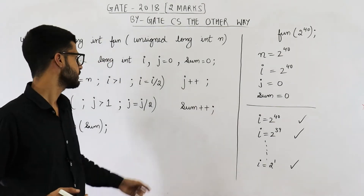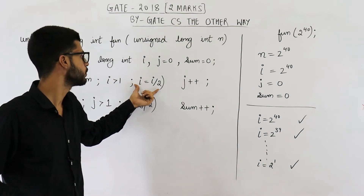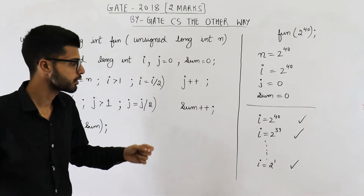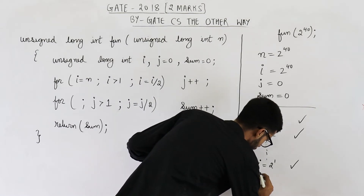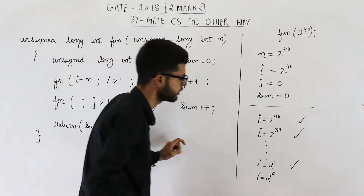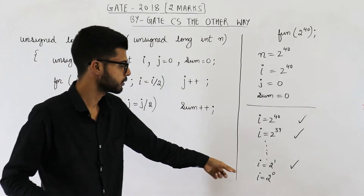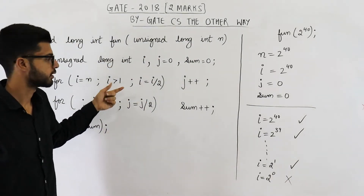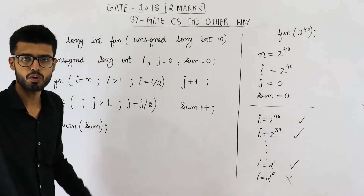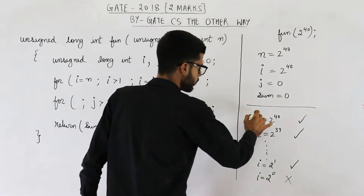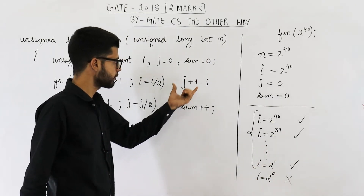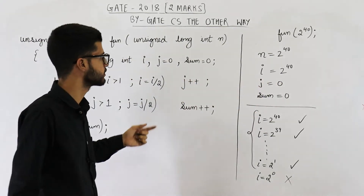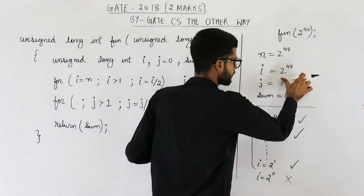In the next iteration, i will become i divided by 2, meaning i becomes 2 raised to the power 0, which is 1. Since 1 is not greater than 1, this condition becomes false and we come out of the loop. In total we have entered the loop 40 times, meaning we have executed j plus plus 40 times. Initially j was 0, so after this loop the value of j will be 40.